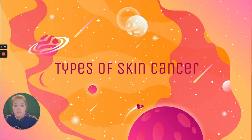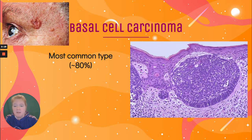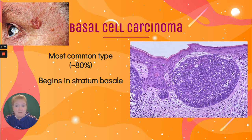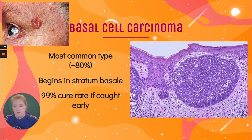What are the types of skin cancer? There's basal cell carcinoma — it's the most common type, about 80% of skin cancers. It begins in the stratum basale, hence the name basal. It has a 99% cure rate if caught early, making it the least fatal and least problematic type, as long as it's caught early.